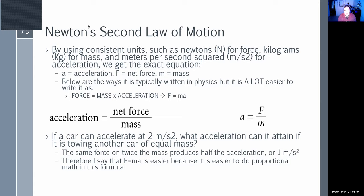If we have a car accelerating at 2 meters per second squared, what acceleration can it attain if it's towing another car of equal mass? Well, if it doubles the mass, the force has to double to maintain the same acceleration. F = MA makes things a lot easier to figure out.